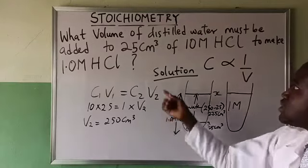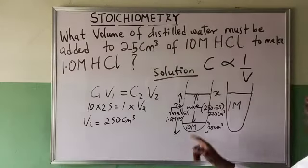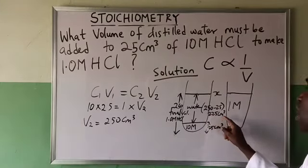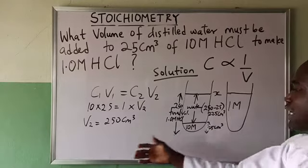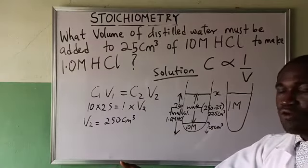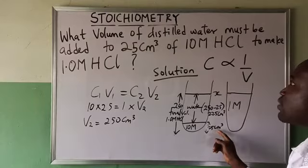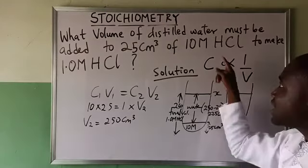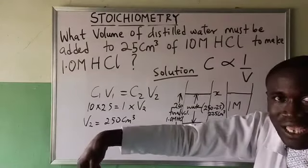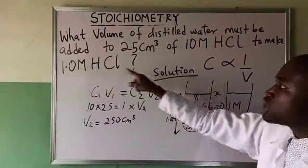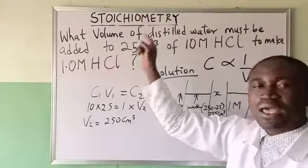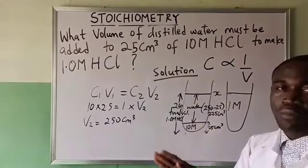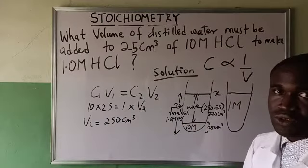What it means now is that I am to take 225 cm³ of water and keep it in a conical flask, take 25 cm³ of that concentrated HCl and add inside that water to be able to give me 1.0 molar HCl. Don't do the opposite to avoid issues.